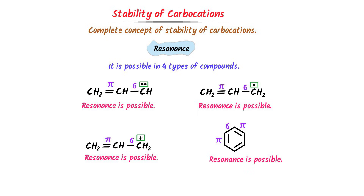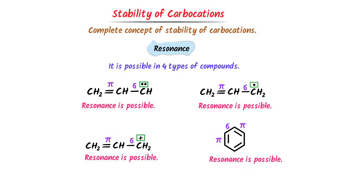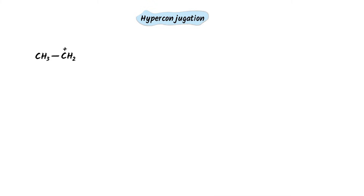If you want to master the concept of resonance, watch our video and its link is given in the description. Now the second concept is hyperconjugation. Consider this ion. This positive charge on carbon means that the p orbital of the carbon is empty. The adjacent carbon is the alpha carbon, and these three hydrogens are called alpha hydrogens. So this ion has three alpha hydrogens.